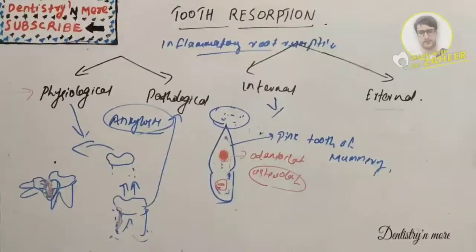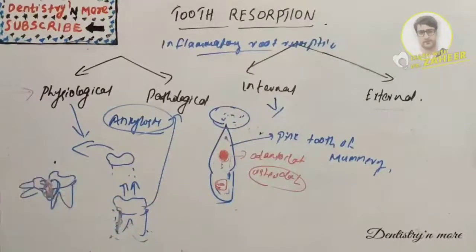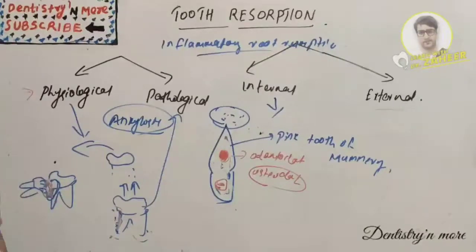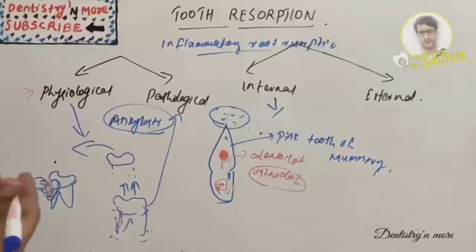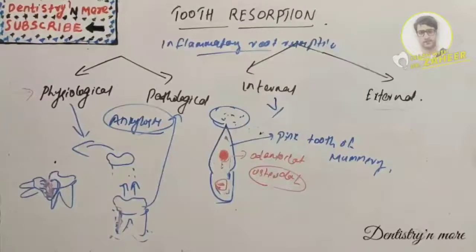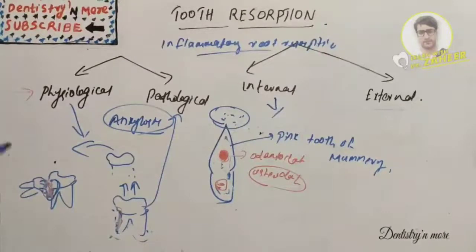Management of tooth resorption begins with removal of the stimulant factor — pressure or infection. If it is an impacted tooth, it should be removed. For pulpal causes, pulpectomy is indicated, or calcium hydroxide can be applied as an intracanal medication for 6 to 24 months. Calcium hydroxide has an antibacterial effect and increases the pH of dentine, thereby inhibiting osteoclast activity and acid hydrolysis.